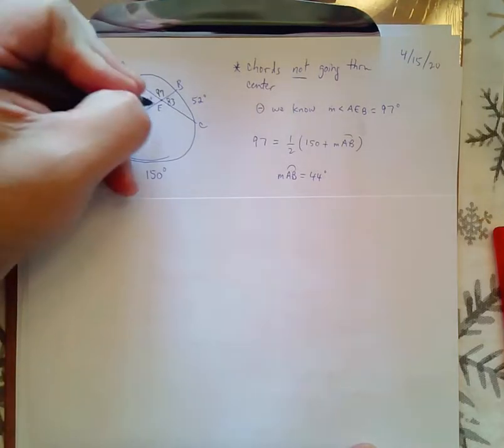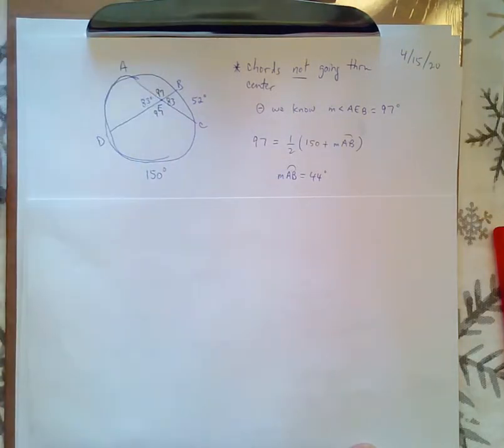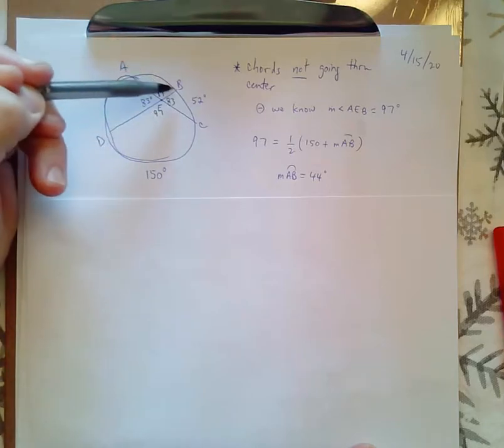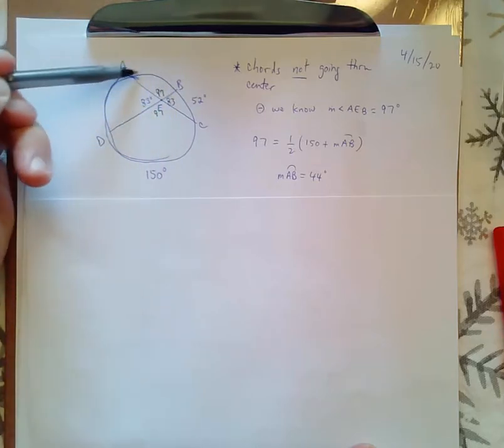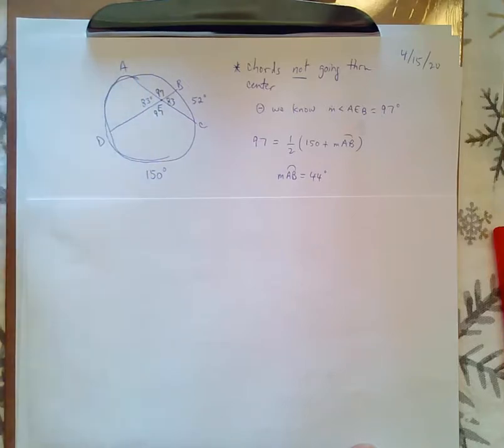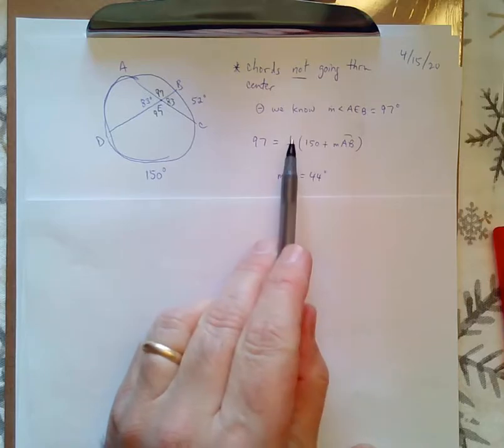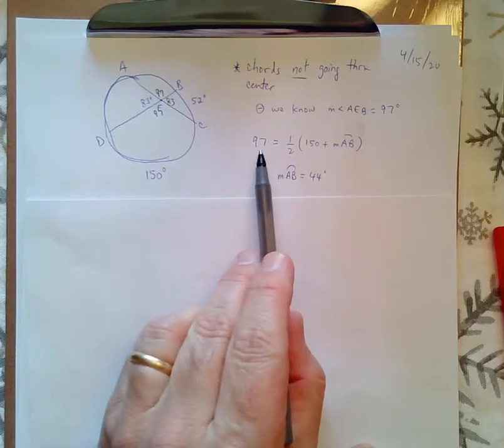Okay, so I know that this is also 97 degrees, vertical angles. So, if I want to find this missing angle, the measure of arc AB, it's going to be 150 plus that arc, half of it is going to be equal to the angle inside.